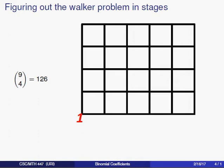One way to solve this problem is to note that no matter which route the walker takes, he will need to take a total of 4 blocks in an upward direction and 5 blocks to the right, for a total of 9 blocks walked. We can mix up the timing on when the walker walks up and to the right. For instance, the walker could go 3 blocks to the right, 2 blocks up, the remaining 2 blocks to the right, followed by the final 2 blocks upward. So we have a different route for each ordering of 4 upward steps and 5 steps to the right.